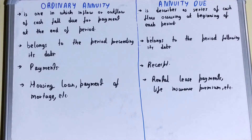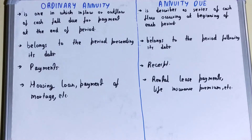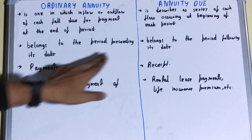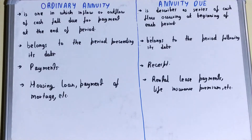But in the case of annuity due, it is described as a series of cash flows occurring at the beginning of each period. So in this, the series of cash flows or the due happens at the beginning of each period. If we talk about the payment, then in the case of ordinary annuity, it belongs to the period preceding its date, whereas annuity due belongs to the period following its date.